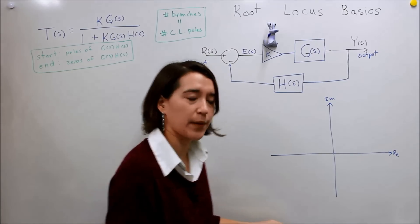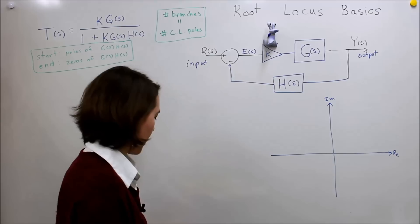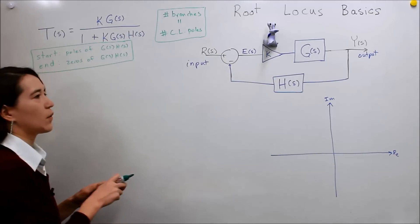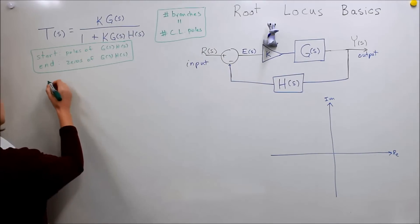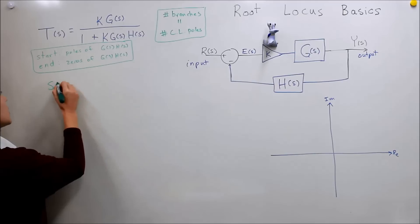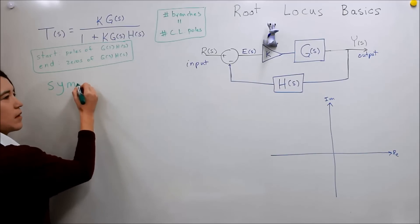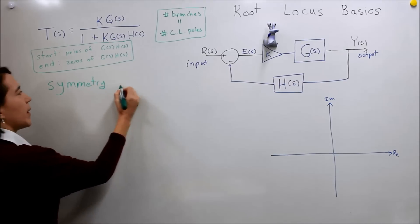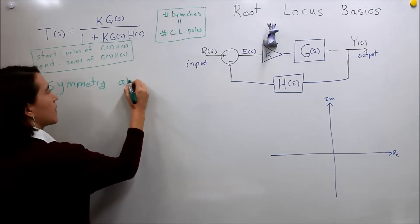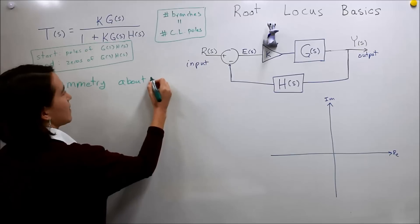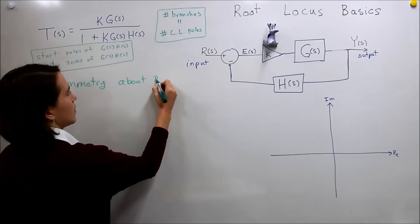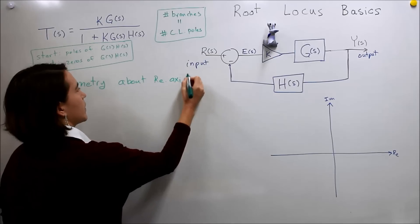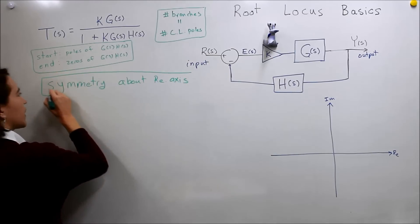There are a few other things we have to remember about the Root Locus. One is that it will be symmetrical — it has symmetry about the real axis. This is another thing you have to remember when drawing.